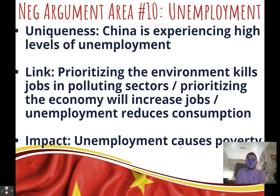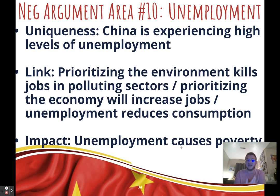Tenth negative argument: unemployment. Uniqueness: China is facing an unemployment crisis, largely caused by lockdowns and other factors. Link: when we prioritize the environment, we try to decrease polluting industries, which often employ more people than newer advanced industries, so we take away even more jobs. Unemployment can actually be good for the environment — fewer jobs means less consumption, less production, and less pollution — so when you vote affirmative, the unemployment problem worsens; when you vote negative, it gets solved. Impact: unemployment causes poverty.